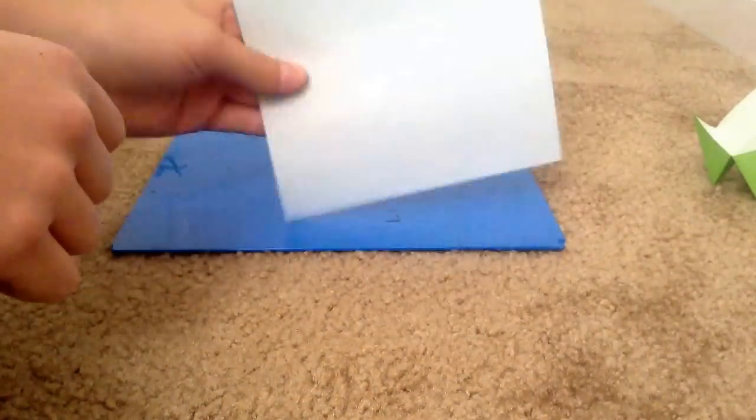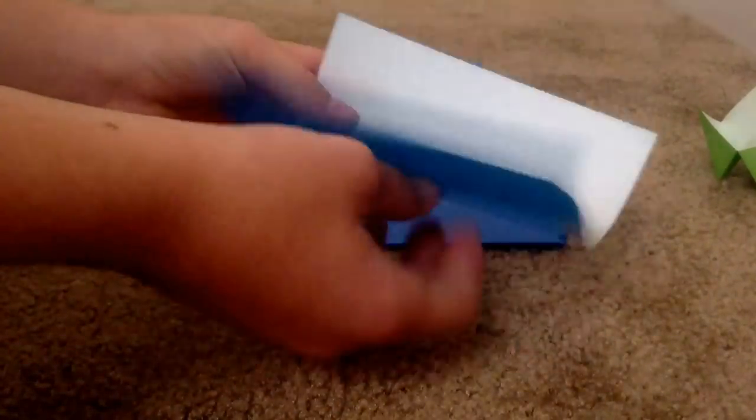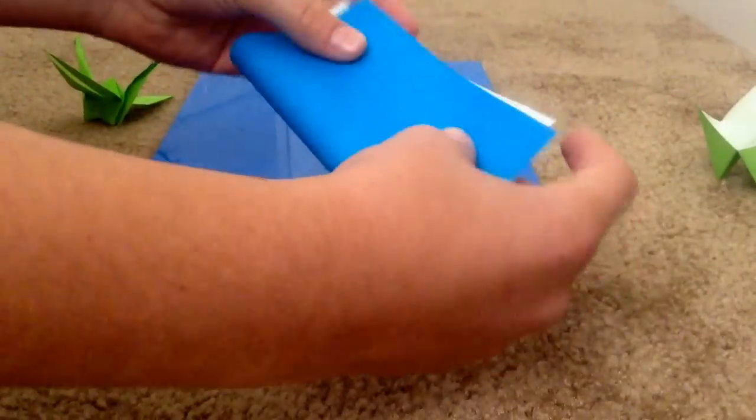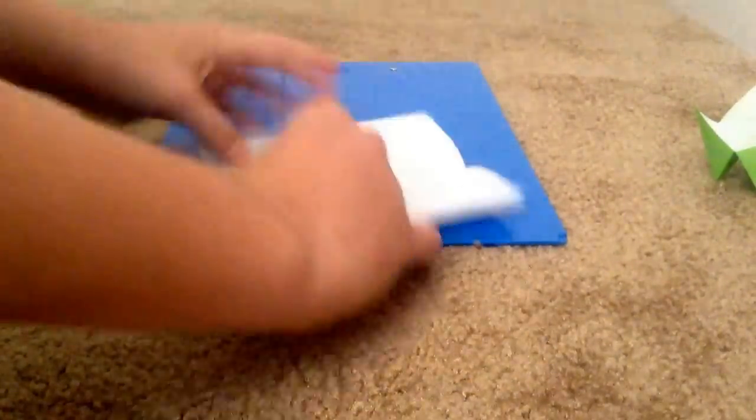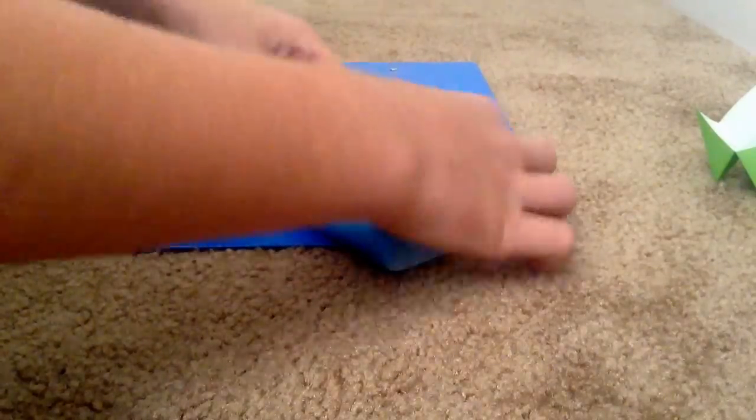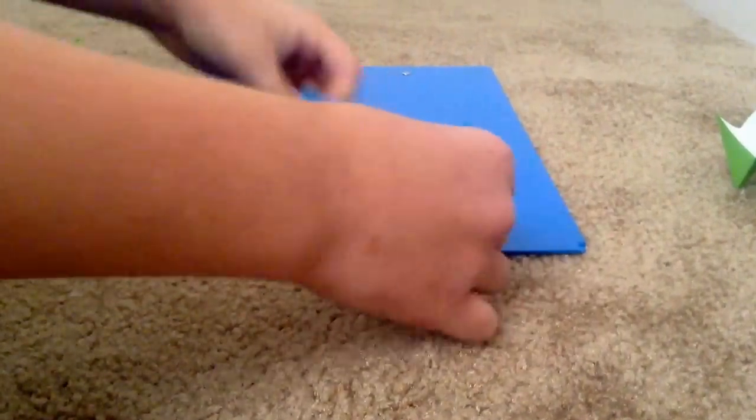First, you're going to want to start with a square piece of paper. Fold it in half, vertical and horizontal, so you get four different folds.